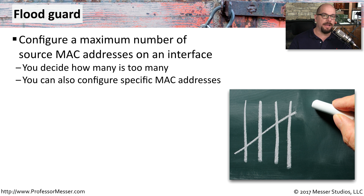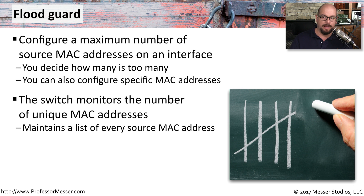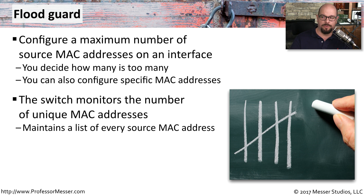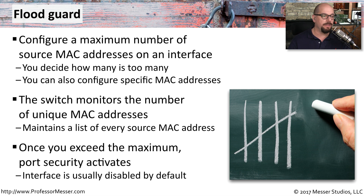A flood guard lets you configure a maximum number of MAC addresses that can be seen on any particular interface. You define how many MAC addresses is appropriate to prevent anyone from overloading the network. The switch then monitors MAC addresses on an interface and identifies if the count ever exceeds the configured flood guard threshold — activating filtering or disabling interfaces to prevent a denial of service.